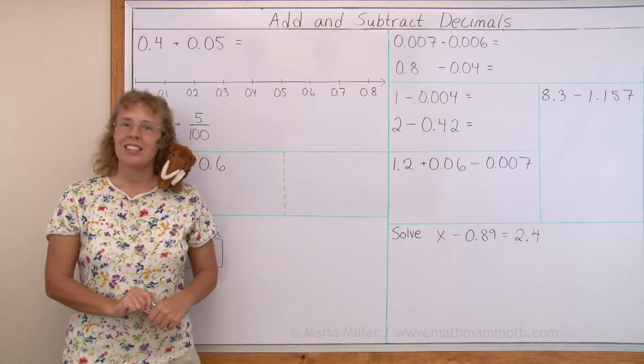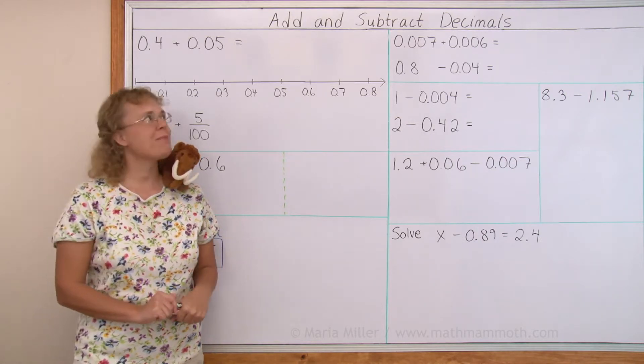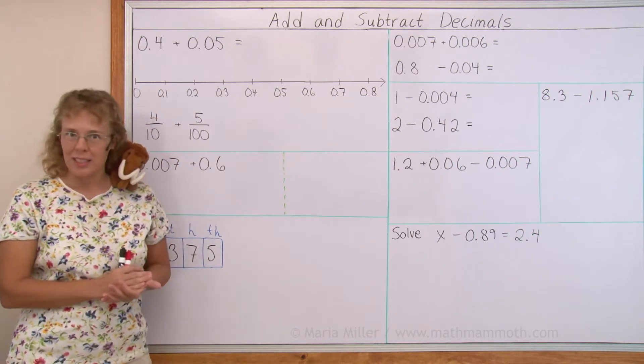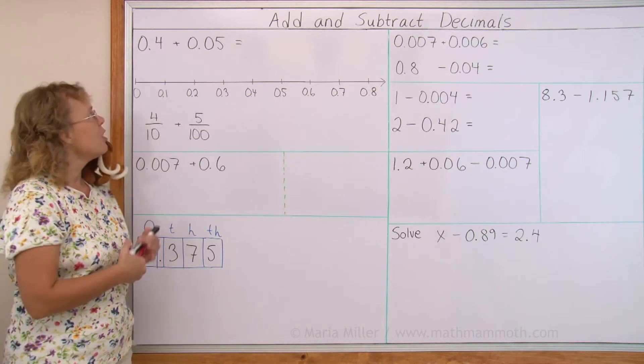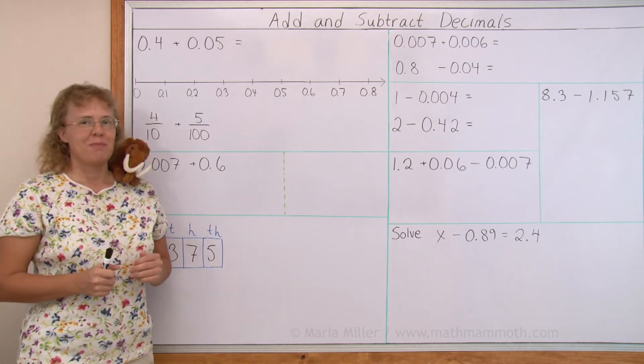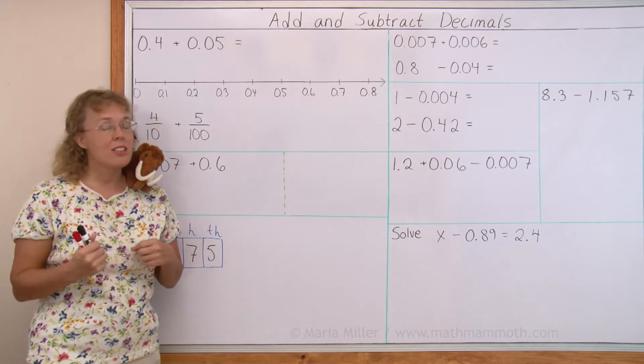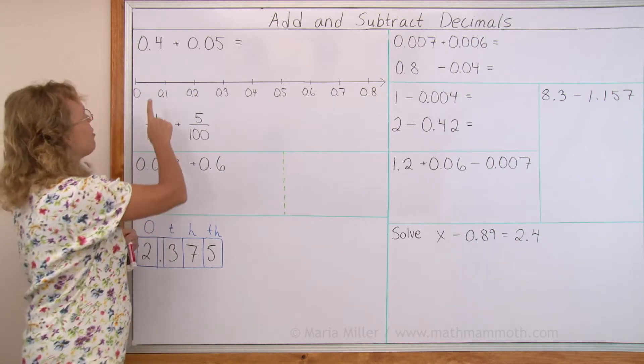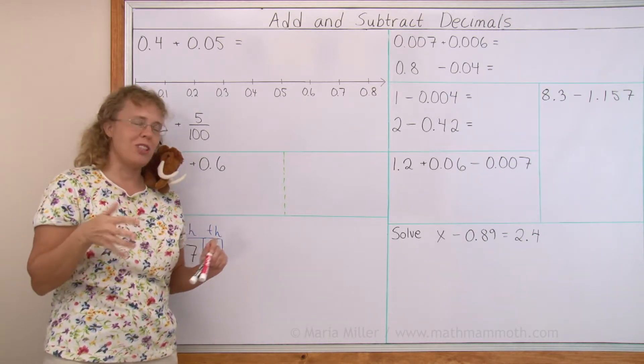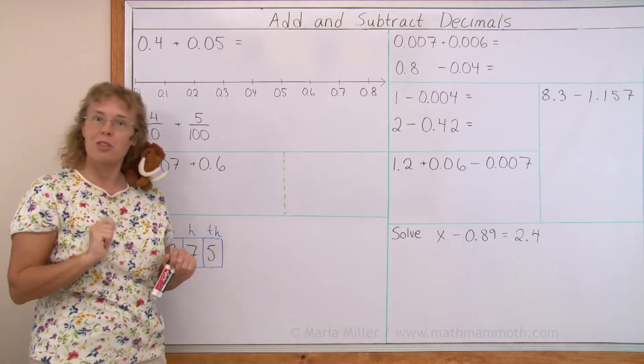In this lesson we are adding and subtracting decimals. My first problem is 0.4 plus 0.05 or 4 tenths plus 5 hundredths. Now, many students have a misconception and they think that here you have to add 4 and 5 and get 9, so the answer is 0.9 or 0.09. What do you think?